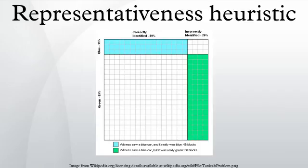Please write down your best guesses about the percentage of students who are now enrolled in the following nine fields of specialization. The nine fields given were Business Administration, Computer Science, Engineering, Humanities and Education, Law, Library Science, Medicine, Physical and Life Sciences, and Social Science and Social Work.